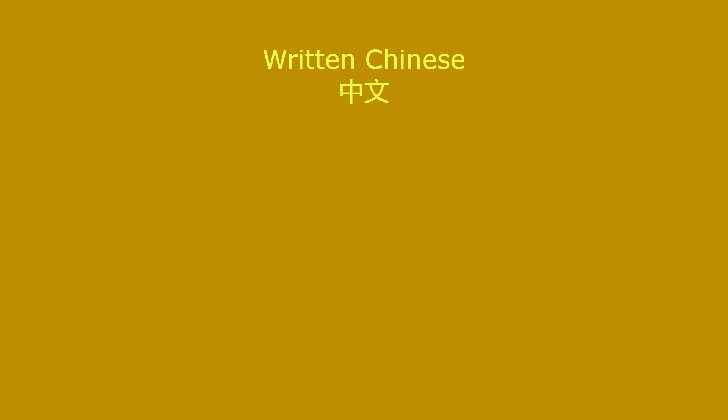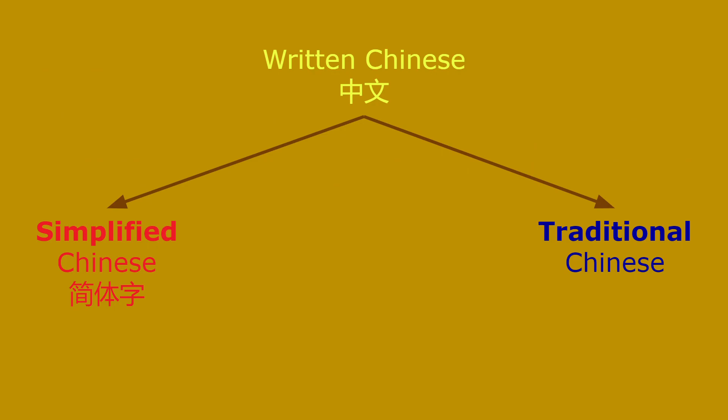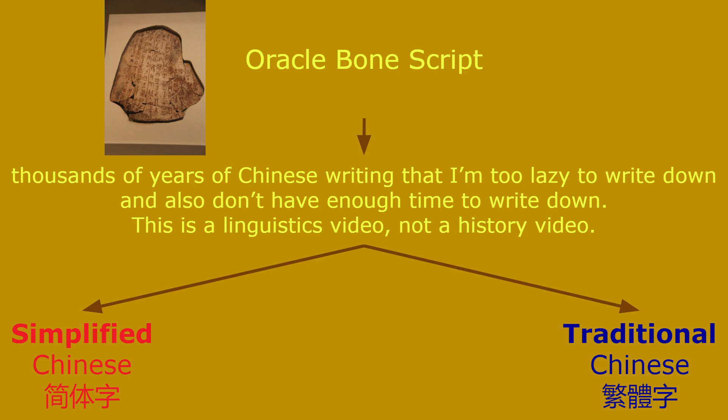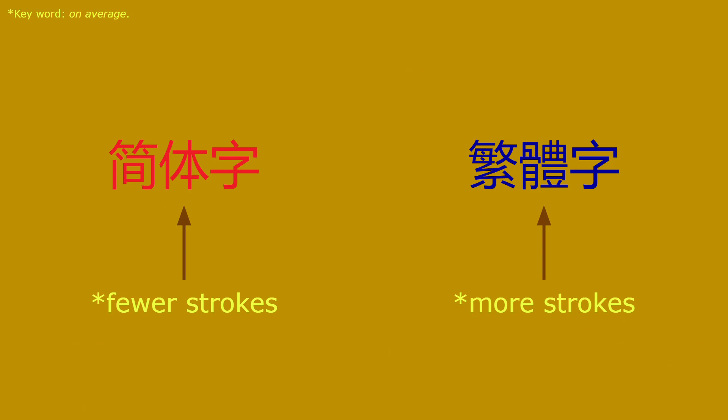When writing Chinese, you have two options: simplified Chinese or traditional Chinese. Why are there two options? This is because of the long history of Chinese writing, which can be dated back to the Oracle bone script around 1200 BC.